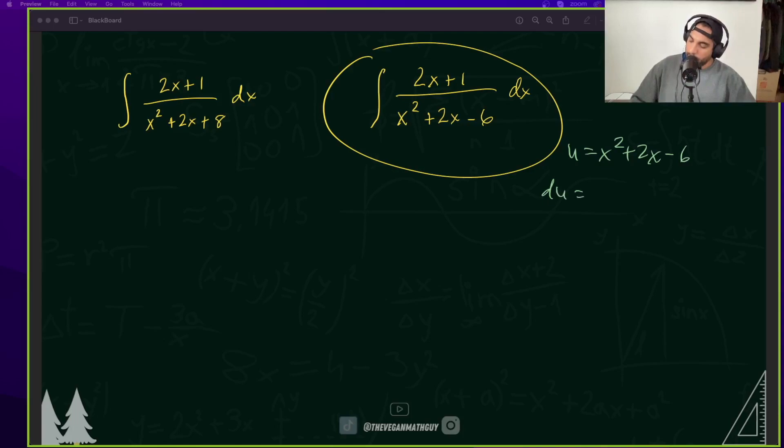So this is what I mean. If I make this my u, then my du is 2x plus 2, and we don't have that in the numerator. So that's where we have to introduce a 2 again, and then a minus 2 as well. So let's go ahead and rewrite this. We have 2x plus 2, once again, minus 1 over x squared plus 2x minus 6 dx. And let's separate this into two different integrals.